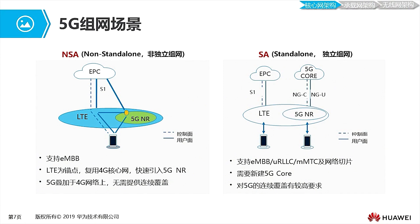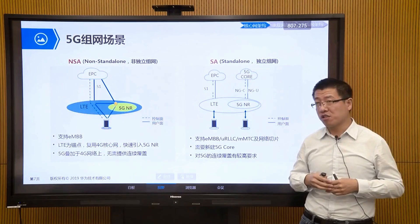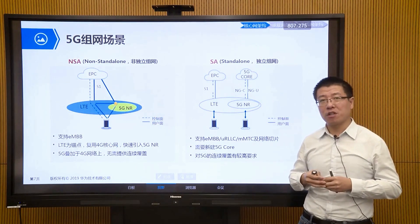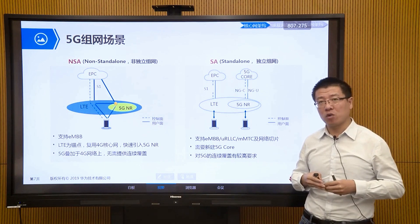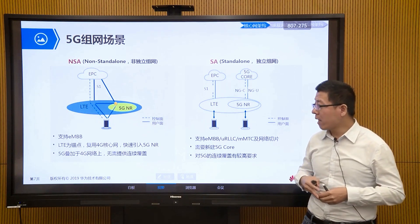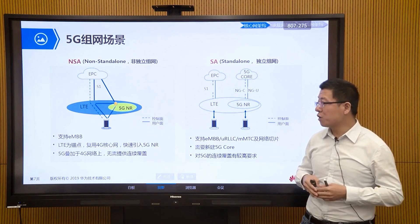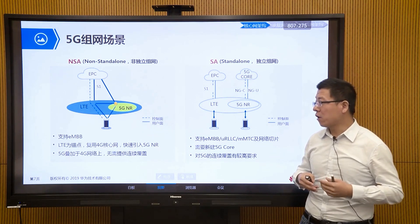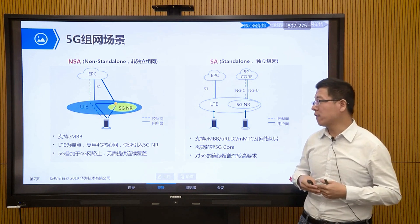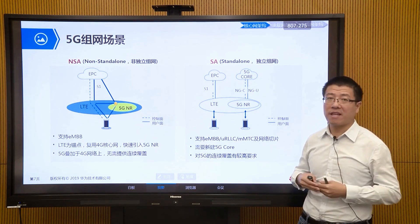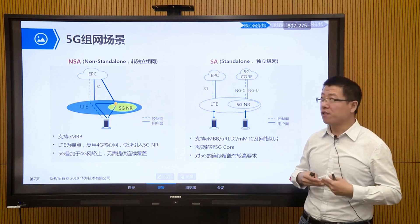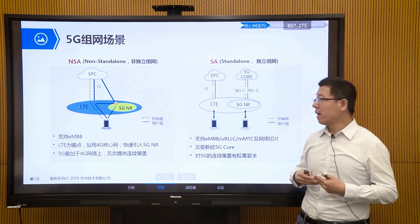NSA also has some characteristics and limitations. For example, it only supports the eMBB scenario, and under this NSA networking method, it does not support slicing. That is, it does not support various new vertical industry applications. Another characteristic is that we use 4G as an anchor point and reuse the 4G core network, though the 4G core network needs to be upgraded to EPC+.